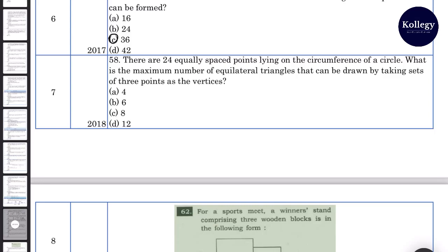In the last part, we solved question number 6. Now we come to question number 7. There are 24 equally spaced points lying on the circumference of the circle. What is the maximum number of equilateral triangles that can be drawn by taking sets of 3 points as the vertices? Question number 7. There is a circle. There are 24 points in the circle.